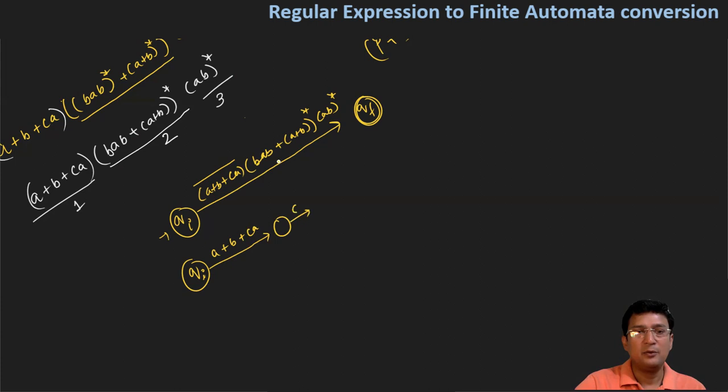Here we have (bab+a+b)*. Then we use epsilon transitions to connect states. We have another closure for (ab)* leading to the final state with epsilon transitions.